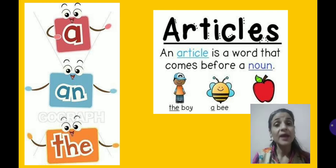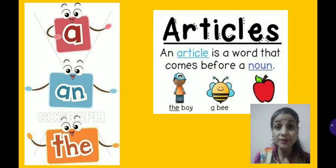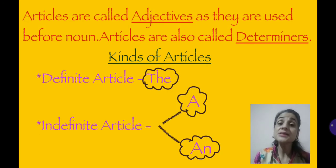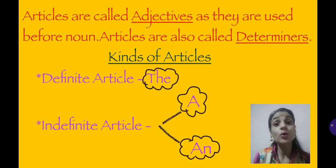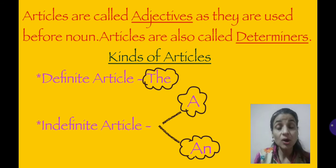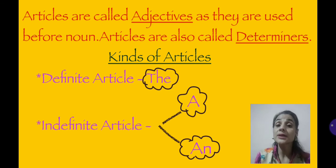Articles: a, an, or the. What is an article? An article is a word that comes before a noun. For example, the boy, a bee, an apple. Children, articles are called adjectives as they are used before a noun. They point out — they tell us the number of a noun or some particular noun. That's why they are called demonstrative adjectives. And they are also called determiners.